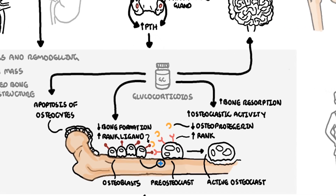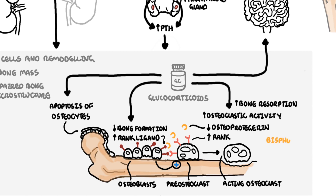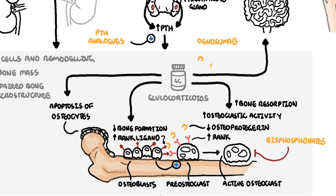Bisphosphonates directly affect osteoclastic activity, inhibiting bone resorption. Parathyroid hormone analogues, interestingly, have a net effect that reduces osteoclastic activity. Denosumab is a monoclonal antibody that binds to RANK-ligand, thereby inhibiting the RANK-ligand and RANK interaction.